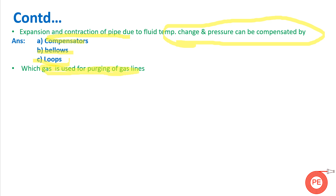Which gas is used for purging? Purging is an important step when starting a new plant, taking a shutdown, or restarting. We purge lines to remove unwanted particles. Basically two things are used for purging of lines: nitrogen — because it is an inert gas — and steam. These two are used for purging of gas lines.